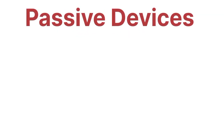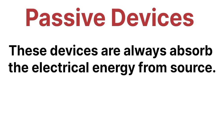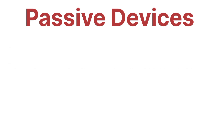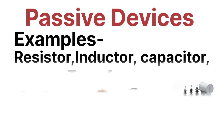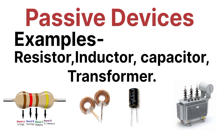Passive devices are generally used to absorb the electrical energy from the source. Passive devices are always ready to absorb the electrical energy from the source. Examples of passive elements are resistors, inductors, capacitors, and transformers — these are the categories of passive devices.